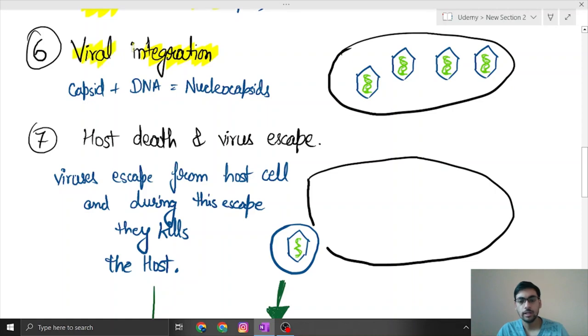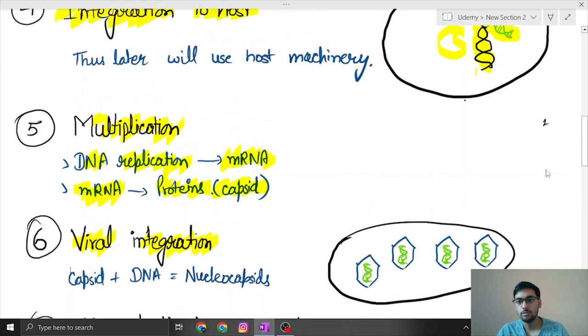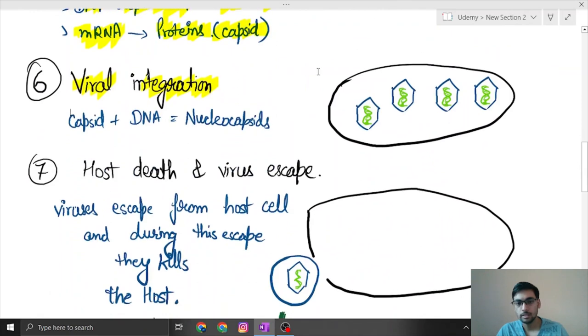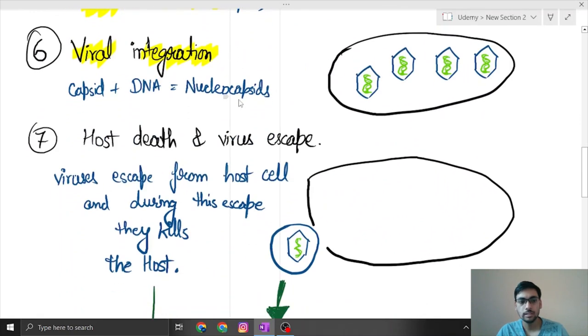Viral integration is a process where DNA will replicate, then capsid will form. In virus integration what will happen is that the capsid which were formed will integrate with the DNA and will form nucleocapsid. These are all nucleocapsid. You can say this is a kind of whole DNA.